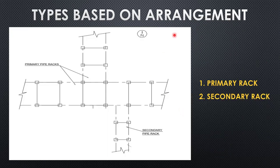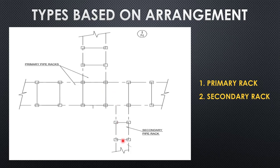The other type is based on arrangement. We have two major arrangements: the primary rack and the secondary rack. The primary rack is the central pipe rack which carries the maximum number of lines, cables, and utilities. The secondary rack is the distribution rack that goes to an individual equipment, individual skid, or individual location. So the primary rack is the central rack and the secondary rack is the branched-out rack.